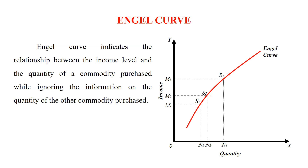It reflects the behavior of a household when income is increasing and how a person is purchasing one particular commodity. We are not talking about other commodities — we are talking about only one commodity, and the rest of the commodities and other behavior would be constant.